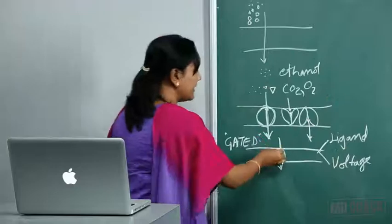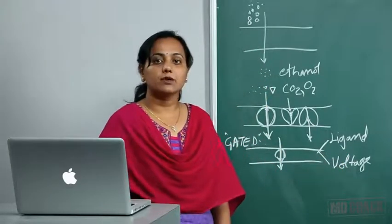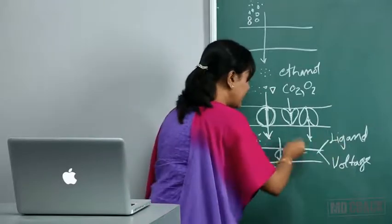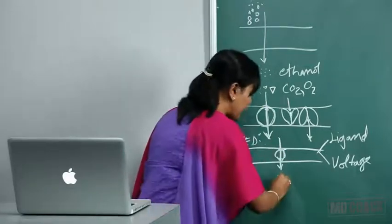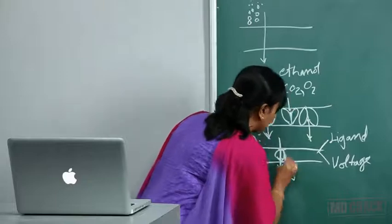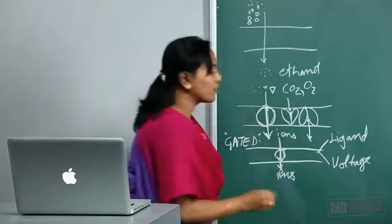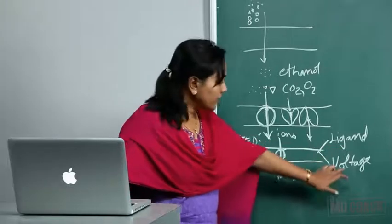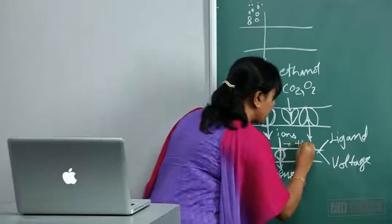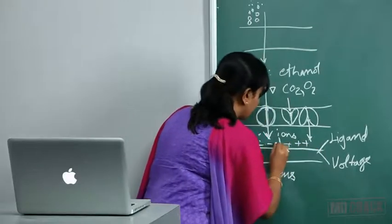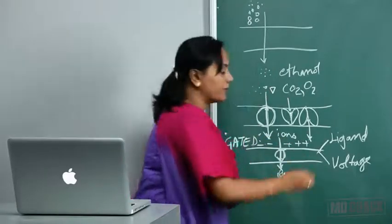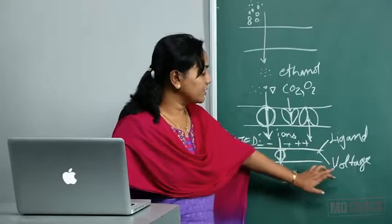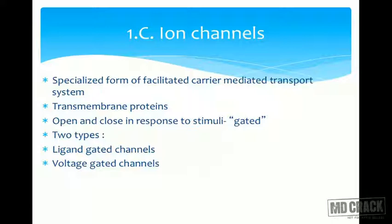There are two types of ion channels: ligand-gated and voltage-gated ion channels. In ligand-gated channels, when a ligand binds to the ion channel, it opens and allows the passage of ions. In voltage-gated channels, when there is a change in membrane potential, the ion channel can open and lead to an influx of ions across the membrane.